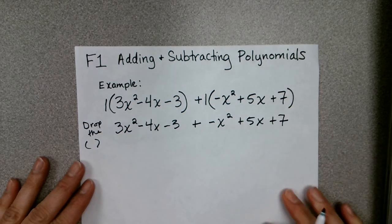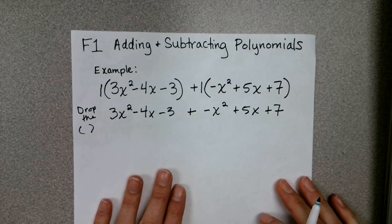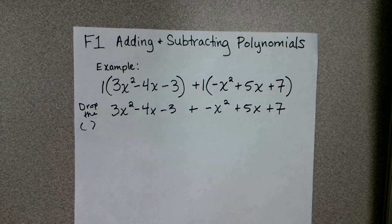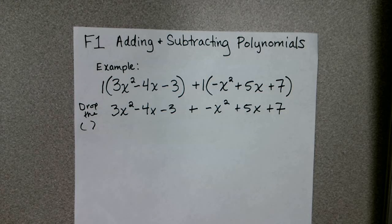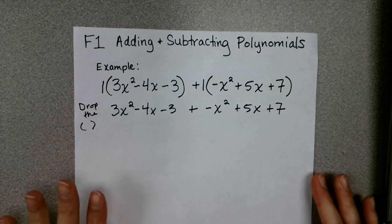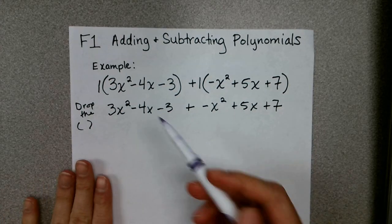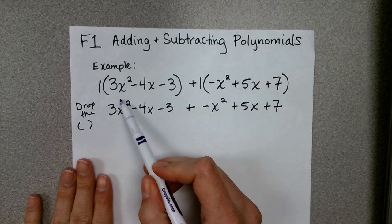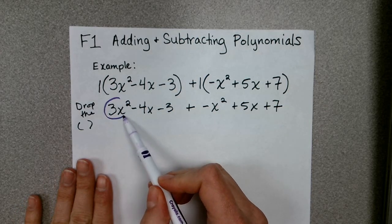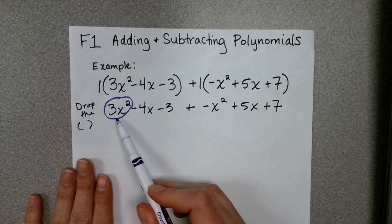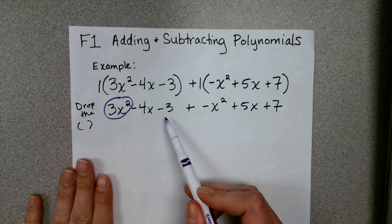Once you drop those parentheses, then it's a matter of combining your like terms. I'm going to go ahead and do this in color, but you can do this just in pencil and just make different shapes. I like to start with the terms with the highest power, so this is 3x².